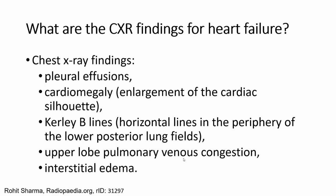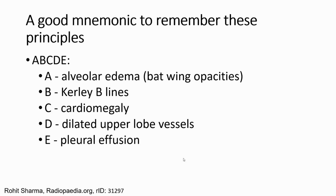To make it easy, remember we have a good mnemonic: A, B, C, D, E. So what is A? A means alveolar edema — upper lobe pulmonary venous opacity. B is Kerley B lines. C is cardiomegaly. D is dilated upper lobe pulmonary vessels. E is pleural effusion.